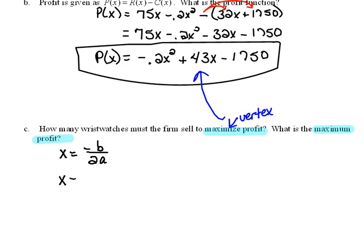So x will equal negative, what's our b value here? Well that would be the 43 over 2 times a, which the a is, remember, the coefficient of the x squared term. So that's negative 0.2.